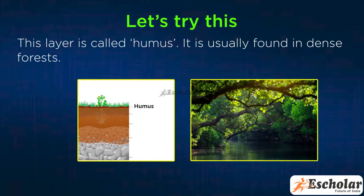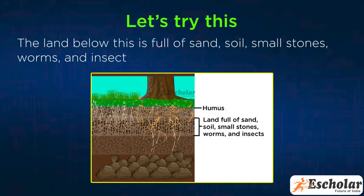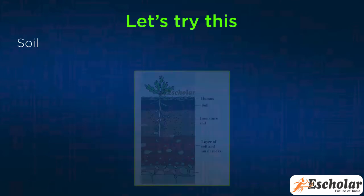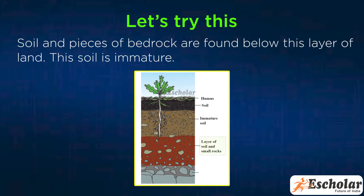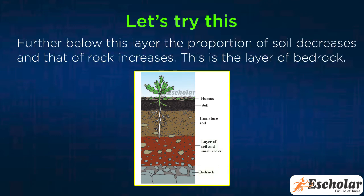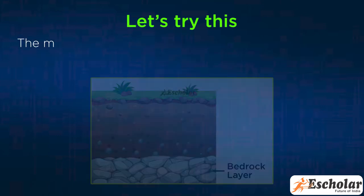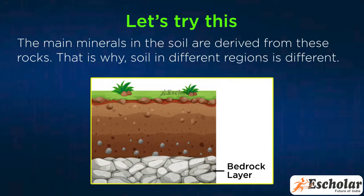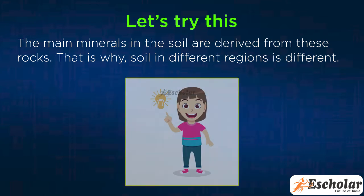Humus is usually found in dense forests. The land below this is full of sand, soil, and pieces of bedrock. Soil and pieces of bedrock are found below this layer. This soil is immature. Further below, the proportion of soil decreases and that of rock increases — this is the layer of bedrock. The main minerals in the soil are derived from these rocks, which is why soil in different regions is different. The colour and texture of soil are both determined by the bedrock.